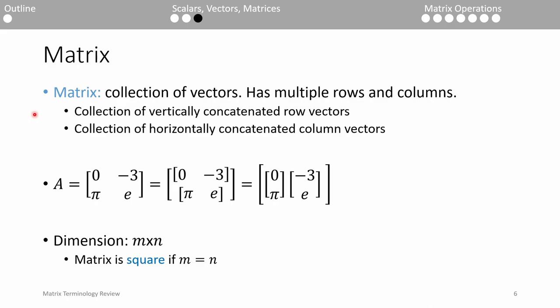You can interpret a matrix as some vertically stacked row vectors or some horizontally stacked column vectors. We say the dimensions are m by n. M and n don't necessarily have to be equal. It's very common for them in linear systems to be equal, in which case we say the matrix is square.